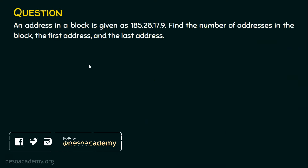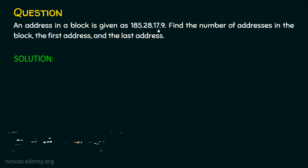The question is: an address in a block is given as 185.28.17.9. Find the number of addresses in the block, the first address, and the last address. We are given an example IP address. Firstly, we need to find out what class the given IP address belongs to. We will solve it now.